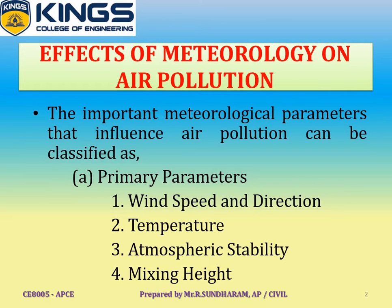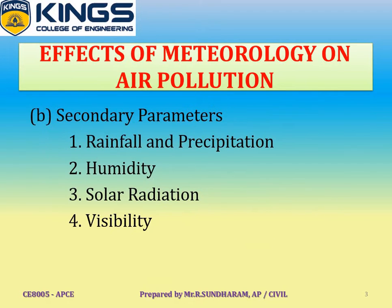The parameters under primary parameters are: wind speed and direction, temperature, atmospheric stability, and mixing height. The factors under secondary parameters are: rainfall and precipitation, humidity, solar radiation, and visibility.